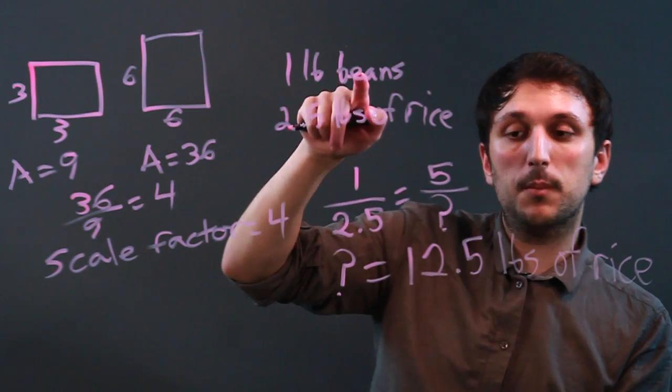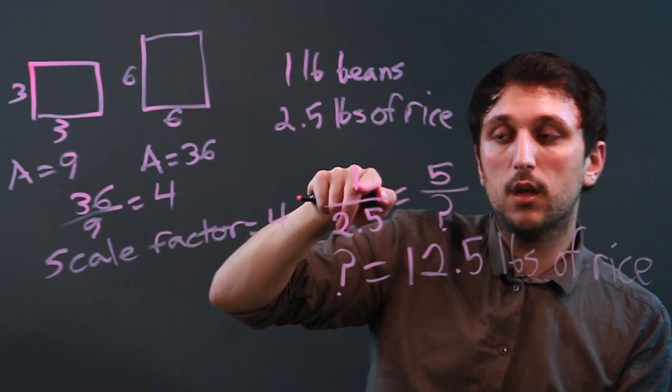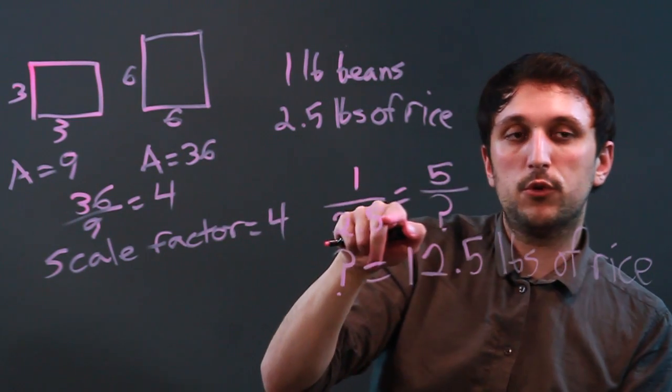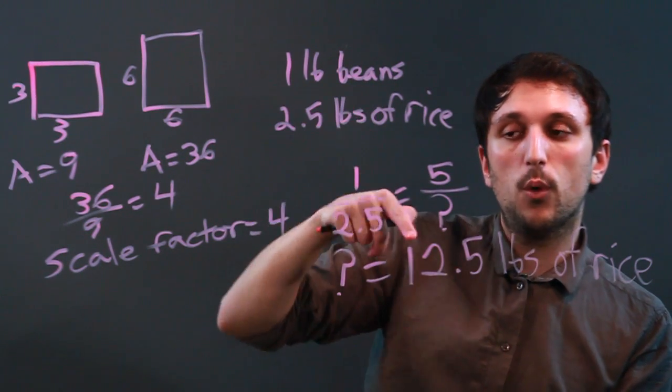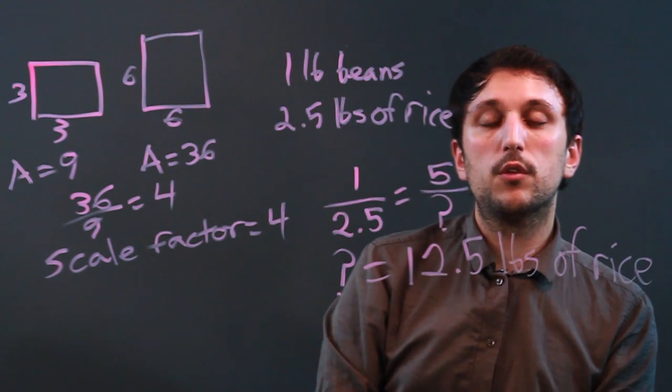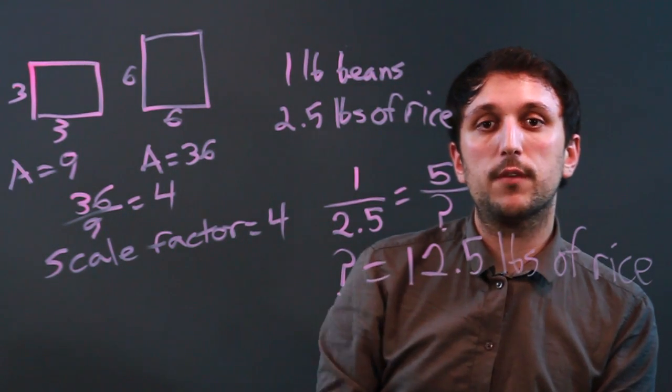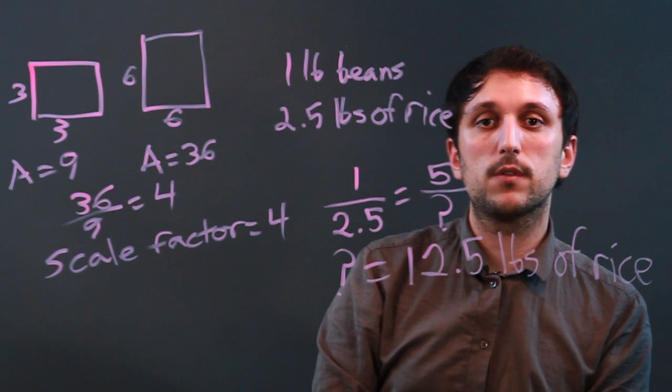If we were just talking about beans, we'd say we were scaling from 1 to 5, or from 2.5 to 12.5. But since we're using two different things, we say it's proportional. So I'm Charlie Kesov, and you just learned the difference between scale factors and proportions. Thanks a lot.